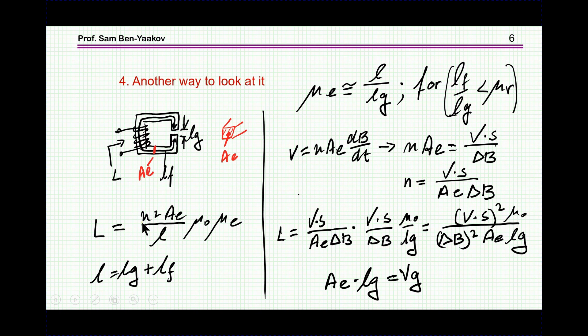And now, into this formula, I'm putting instead of N times AE, this value. And instead of the extra N I have now, this value. Instead of mu sub E, I'll put this value. And lo and behold, I get this equation. And this equation says that the inductance of this core equals this volt second that is required, mu sub 0, delta B that is required, and the volume of the gap.